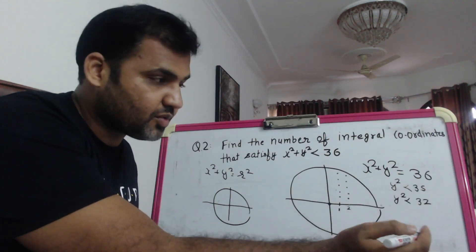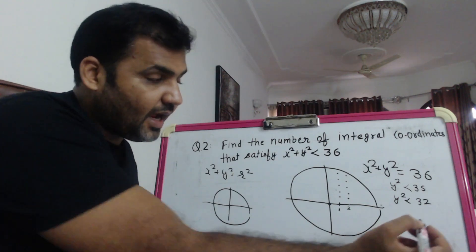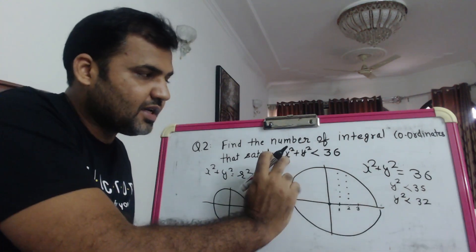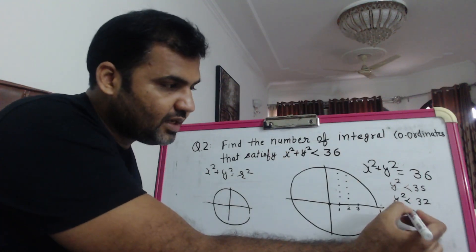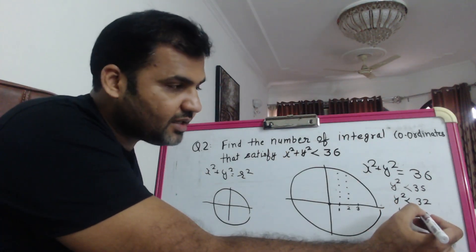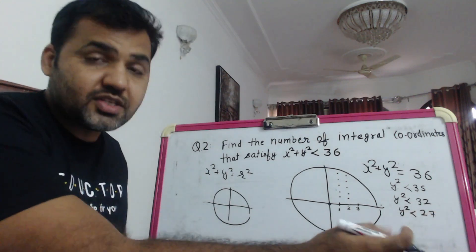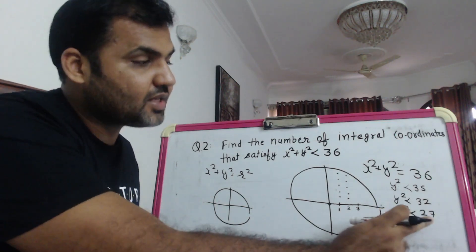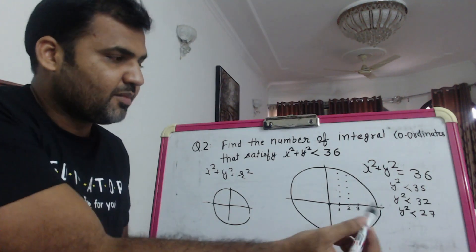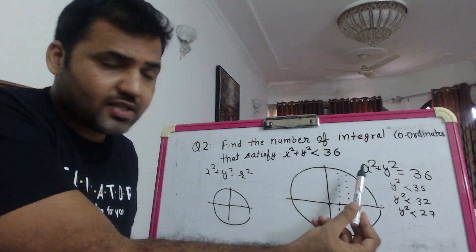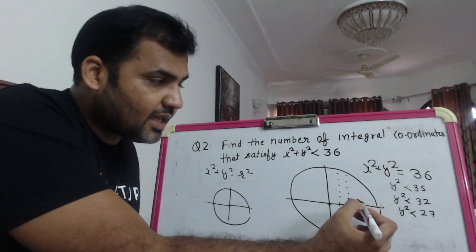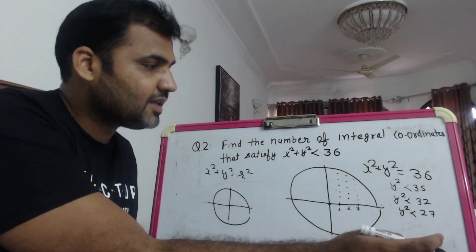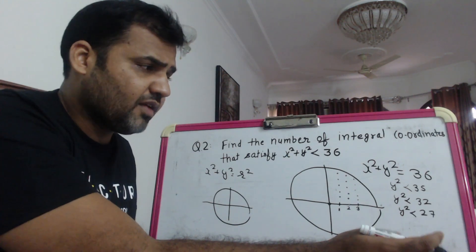If I put x = 3, then 3² = 9, so y² will be less than 36 - 9 = 27. The value of y must be kept below 27 in terms of its square. y can again go up to 5 because 5² = 25 which is less than 27. So y can be 1, 2, 3, 4, and 5 - still 5 values.